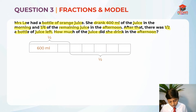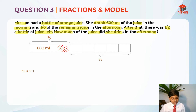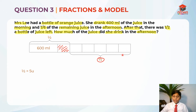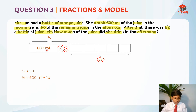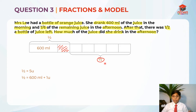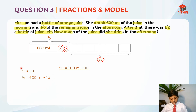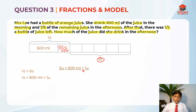So this is the model. Let me write something. Half is equal to 5 units — see this half over here? This is equal to 5 units, because there are 5 units over here. Another half is also equal to 600ml plus 1 unit. Since this is half, this should also be half. Because it's a bottle — if you drink half, there's half left. Since both of these are equal to half, that means 5 units equals 600ml plus 1 unit.